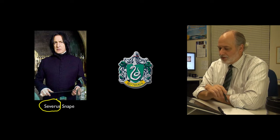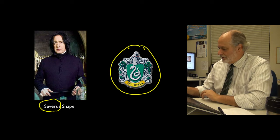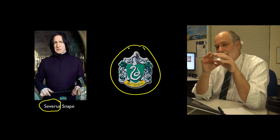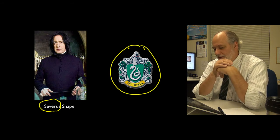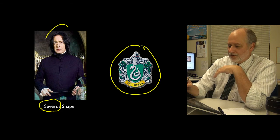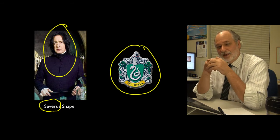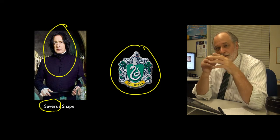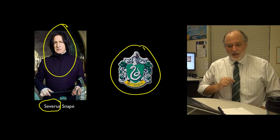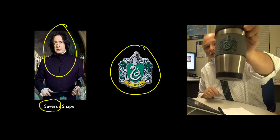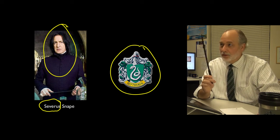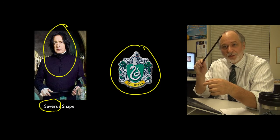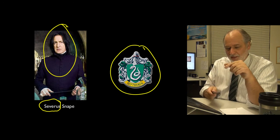Given my name - Charles Severance, Severus Snape - students said I couldn't be in Gryffindor and I have to be in Slytherin. I've resigned myself to that. The beautiful thing about Slytherin is that Severus Snape is like a combination good guy-bad guy - he seems to be a bad guy but turns out to be a good guy in the end. I like that. So I am representing my Slytherin clan with an official Slytherin tie, Slytherin tea cup, and my official Severus Snape wand.